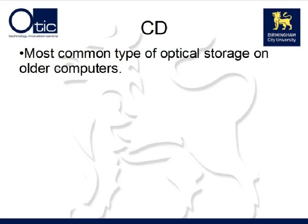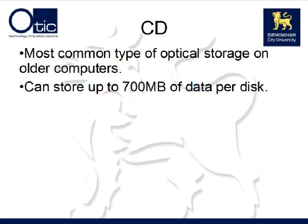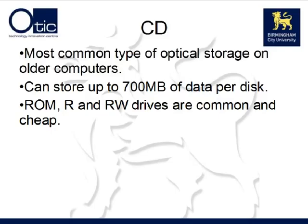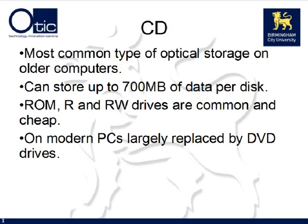Now we'll look at some specific optical storage technologies. The first of these is the CD, the most common type of optical storage technology on older computers. It can store up to 700 megabytes of data per disk. Read-only, writable, and rewritable drives and media are commonly available and very cheap. CD drives have been largely replaced by DVD drives on modern computers, due mostly to the low storage capacity of the CD drive.